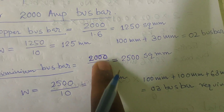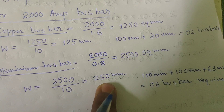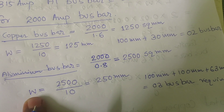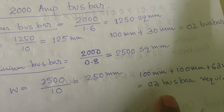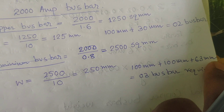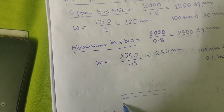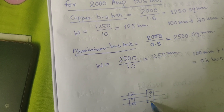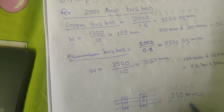For a 2000 ampere aluminum busbar: 2000 divided by 0.8 equals 2500 square mm, giving a width of 250 mm. Since no single 250 mm busbar is available, three busbars are connected in parallel — 100 mm, 200 mm, and a third — using mechanical arrangements to achieve the required 250 mm equivalent width for the aluminum busbar system.